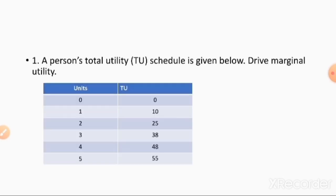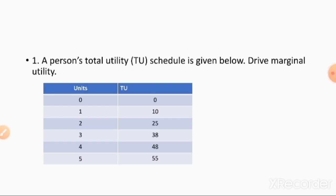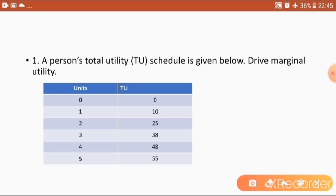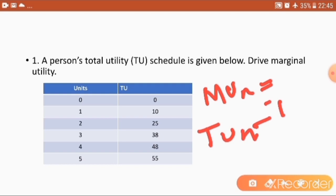Now let's see how to calculate total utility and marginal utility. In the given problem, we have to derive the marginal utility. The question is: a person's total utility schedule is given, and we have to derive the marginal utility. The formula for finding out the marginal utility is: MU_n = TU_n − TU_(n−1). Using this formula we have to calculate the marginal utility.